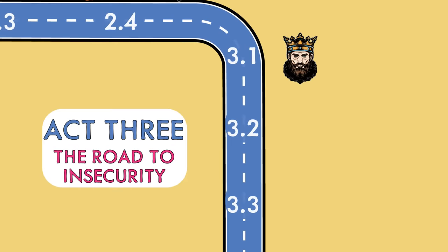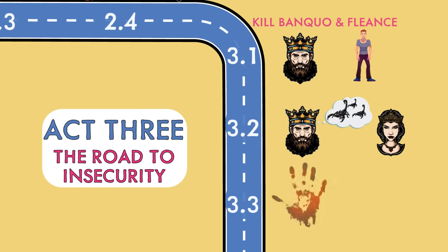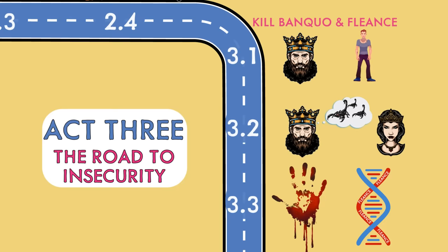At the beginning of Act 3, Macbeth is already worried about the threat from Banquo's descendants, which is why he orders the murder of Banquo and his son Fleance. In the next scene, he expresses his anxiety about Banquo and Fleance to Lady Macbeth, saying: 'Oh, full of scorpions is my mind, dear wife.' These scorpions metaphorically represent the deadly threat to his security. And in the very next scene, although the murderers kill Banquo, Fleance escapes, so the threat from Banquo's descendants remains.